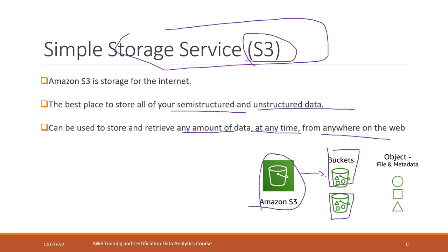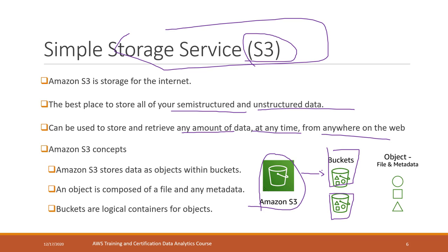In S3, data is organized into different buckets. A bucket is like a folder, similar to when you use Google Drive, OneDrive, or Dropbox. The bucket is a logical container on S3, and within each bucket you can define multiple folders or store objects directly. The data stored in S3 is called an object. An object is composed of the file and any metadata associated with that file, and S3 can query your files through the metadata.